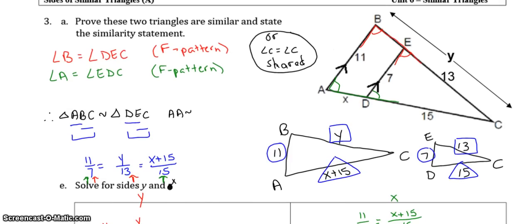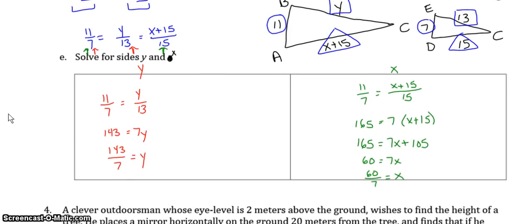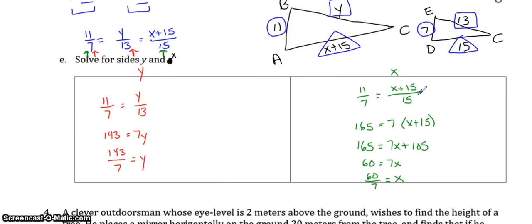For example 3. Once again, when one triangle is inside the other, I suggest you draw them out separately. Most people will use the F pattern to say B and E, A and D. But don't forget that angle E, because it could be here, or because it could be here, and same with angle D, you need to use the three letters. So, you can state these two because of the F patterns, or you might have said C equaled C because of shared. And here's what you get when you cross multiply. Don't forget, when solving for X, you had the distributive property that you had to use.